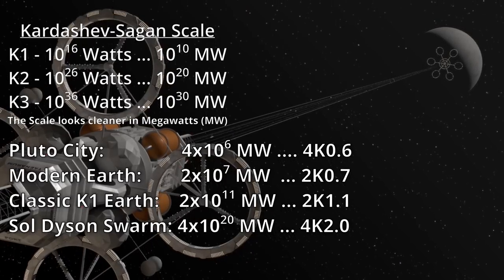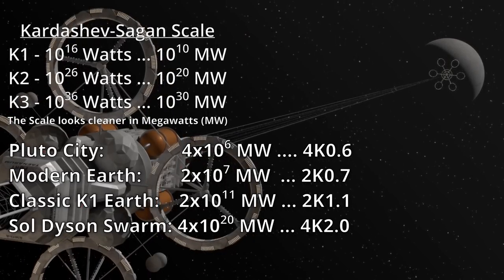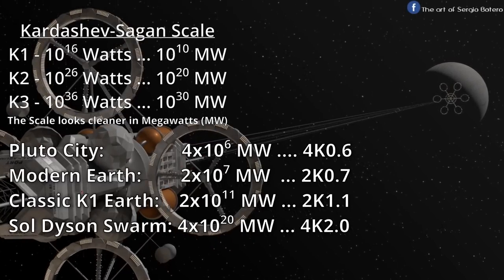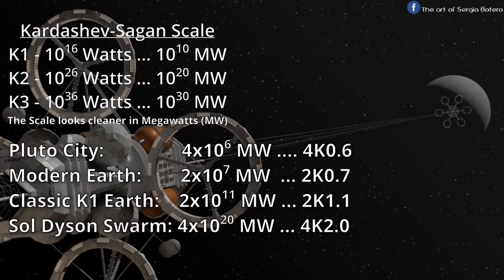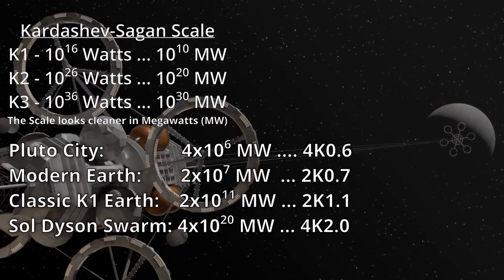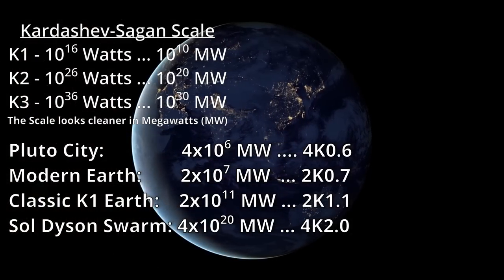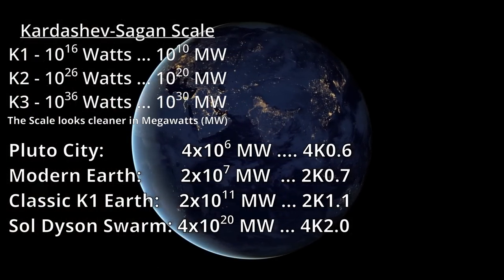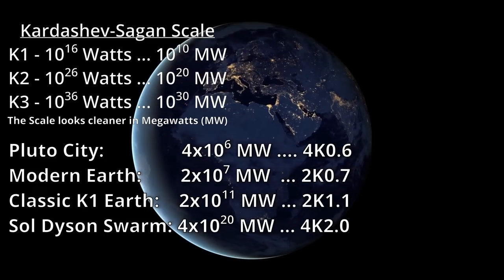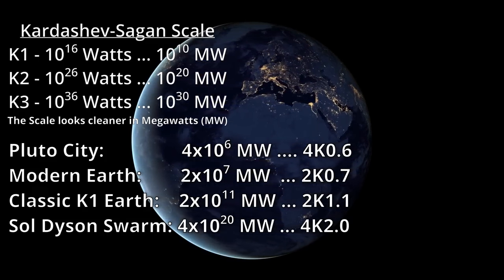So a default K1 Earth is, on this Sagan scale version, 2 K1.1, and this hidden Pluto civilization would be 4 K0.6, and Modern Earth civilization, ignoring all our agriculture and free lighting, would be a 2 K0.7. We'll usually just round on that first digit to say, in that case, K0.7.